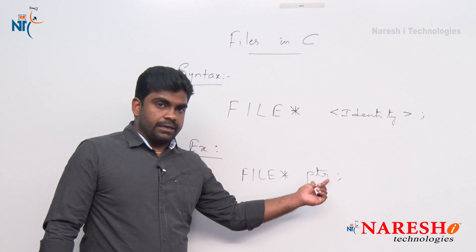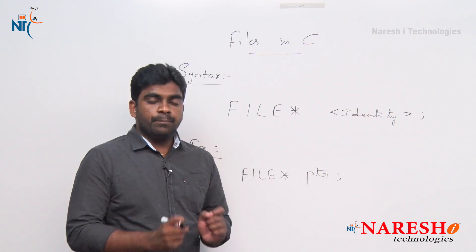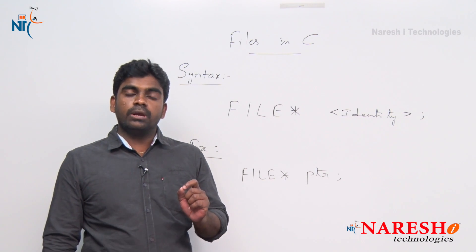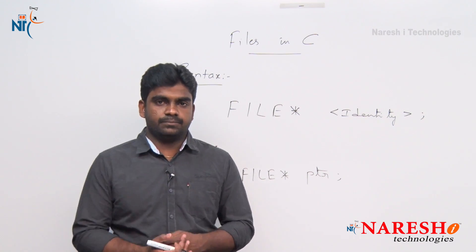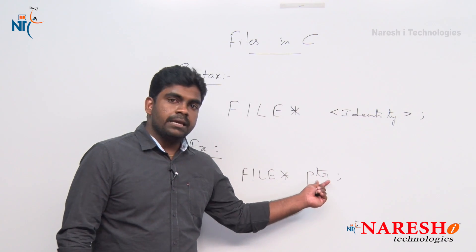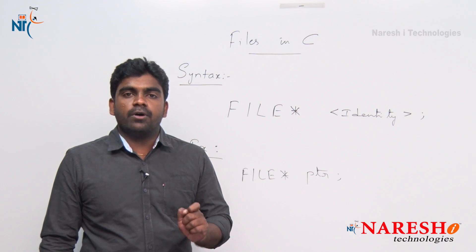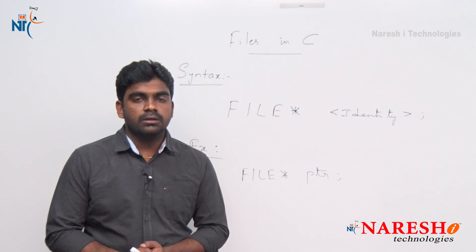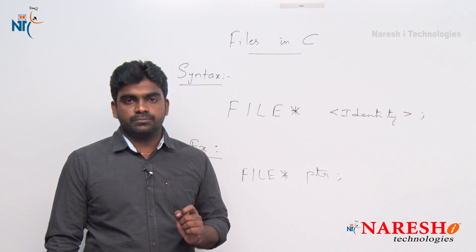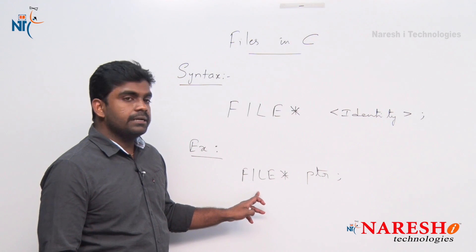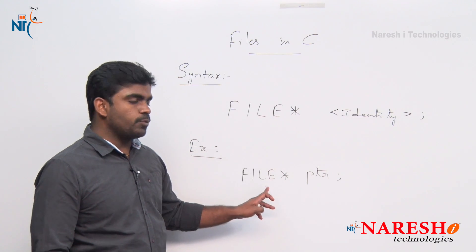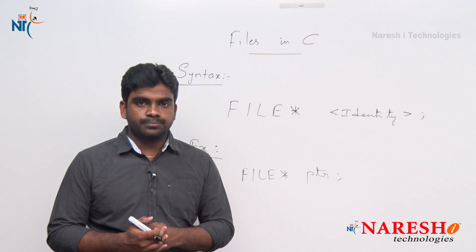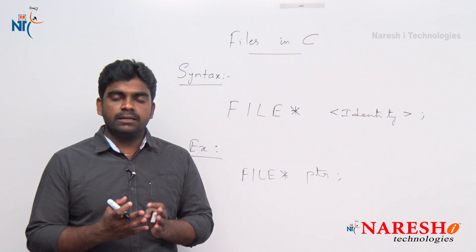The variable name is PTR. PTR is a pointer that can point to any type of file — it can hold the address of the file. This is a file pointer declaration. With the help of this pointer only, you can process the information of the file. To open a file, we use the fopen function.